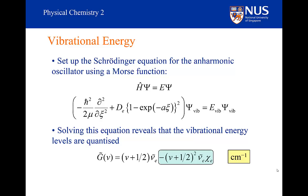In general, the nu sub e chi sub e factor is a small number. This second term is therefore a small perturbation to the vibrational energy. For small values of v, you can sometimes ignore this part, in which case you get back exactly what we had for the harmonic oscillator. If this second term is insignificant, we recover our harmonic oscillator solution.